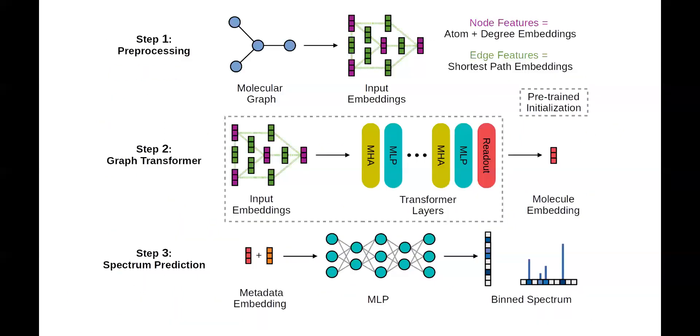The key contribution of our work is a new model for spectrum prediction. Our model, which we call MassFormer, uses a graph transformer architecture to transform the input molecule structure into a fragmentation spectrum. The input to the model is a molecular graph, represented as a set of node and edge features, which capture information about the atom properties and the molecular graph topology, respectively.